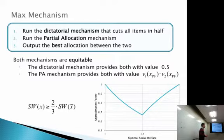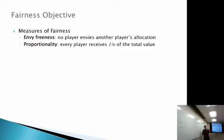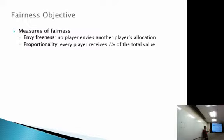Transitioning to fairness: I'll now remove the two-bidder assumption and consider an arbitrary number of bidders. Fairness is not well defined — it can mean many things. Envy-freeness asks that no player envies another's allocation. Proportionality asks that every player receives at least 1/n of their total value. We'll use proportional fairness as our objective, which has been implemented in practice for bandwidth allocation and satisfies both envy-freeness and proportionality.